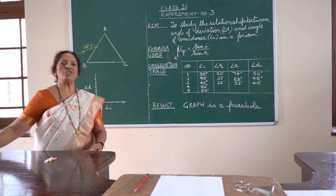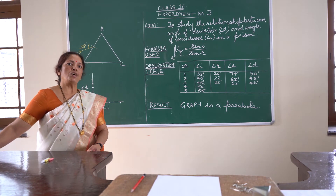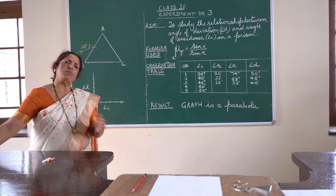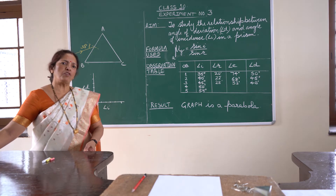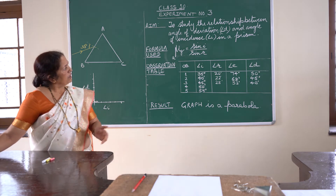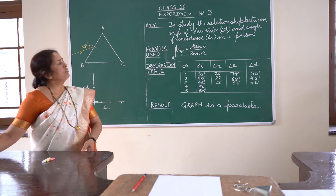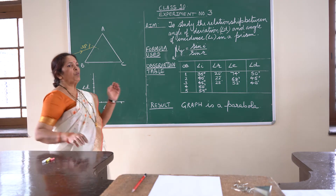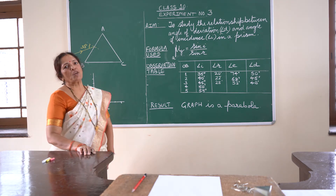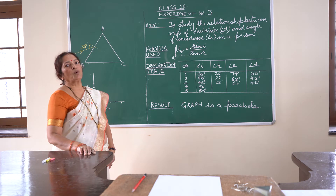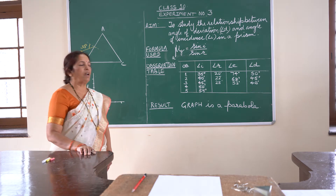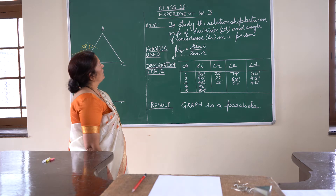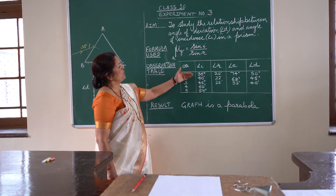The formula used is going to be the same as we did for a glass slab. You can write the formula as: refractive index of glass with reference to air is equal to sin i over sin r. The observation table will be taken with different values of angle of incidence.